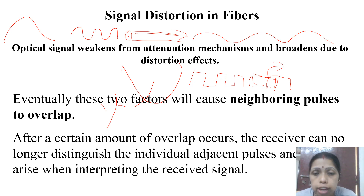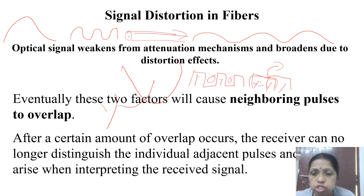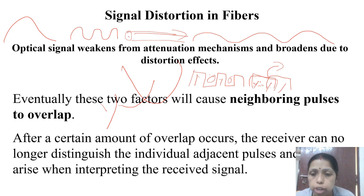Due to dispersion, if you are sending a signal of one-zero-one-zero, you may receive it as one-one-one, and you cannot interpret the proper information at the receiver end. This is the signal distortion inside the fiber. There are various reasons why pulse broadening may happen inside an optical fiber.